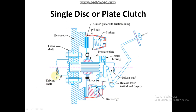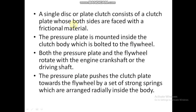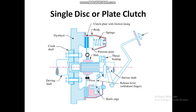When we press the pedal the driving shaft and driven shaft are disconnected, but whenever we release the pedal the springs extend and the pressure plate applies pressure on the clutch plate to attach it with the flywheel. Power is then transmitted from the driving shaft to the driven shaft and the engine power is supplied to the wheels and your vehicle moves. A single disc or plate clutch consists of a clutch plate whose both sides are faced with friction material.